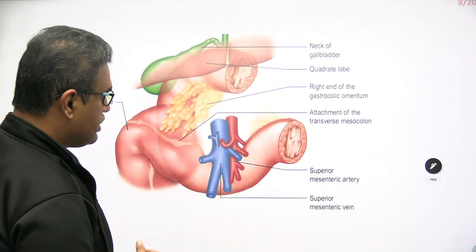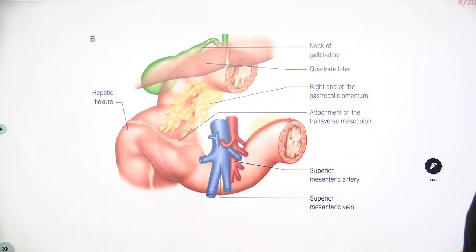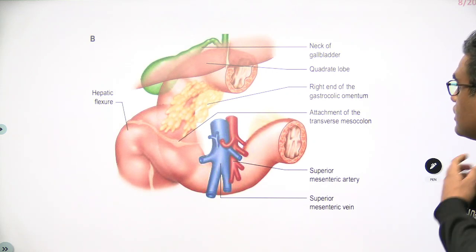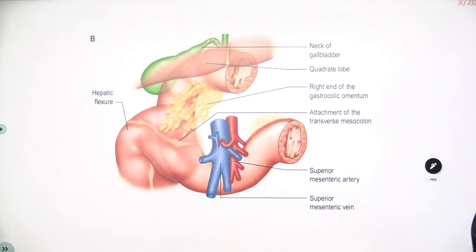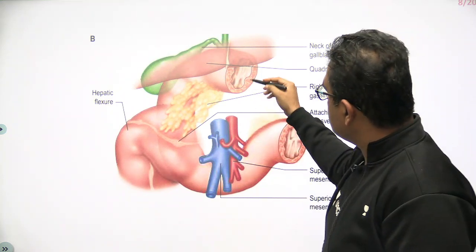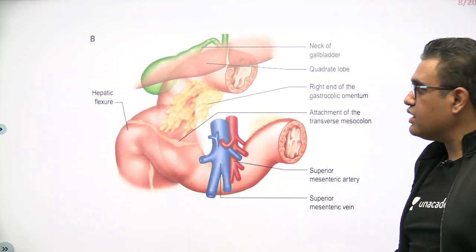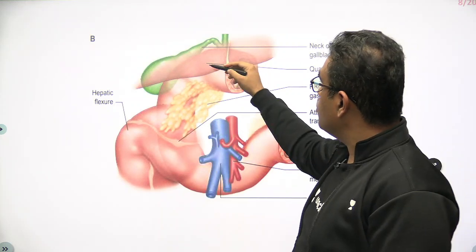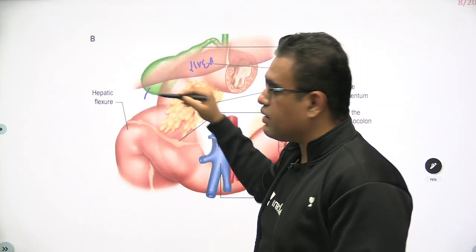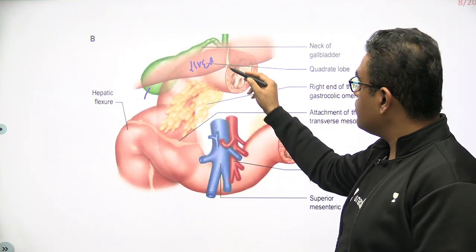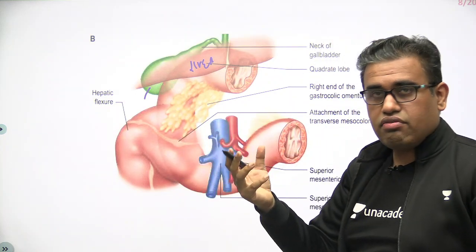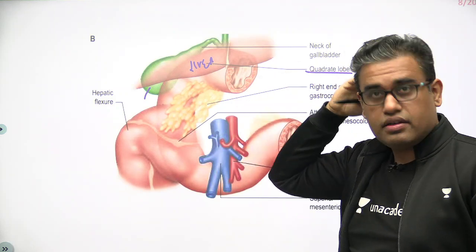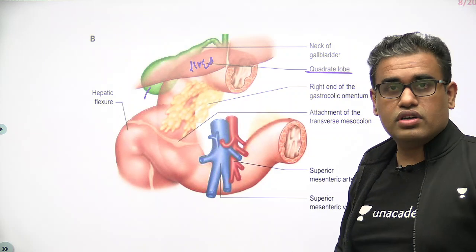This figure shows the relations of the duodenum — specifically the anterior relations. The duodenum is visible here with its first, second, third, and fourth parts. Anterior to the first part is the lower end of the liver, specifically around the quadrate lobe, and the gallbladder — with the fundus of the gallbladder approaching the second part of the duodenum.